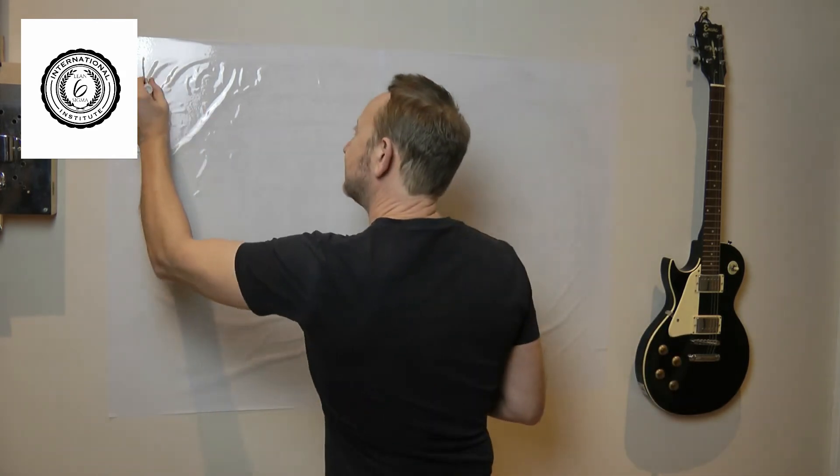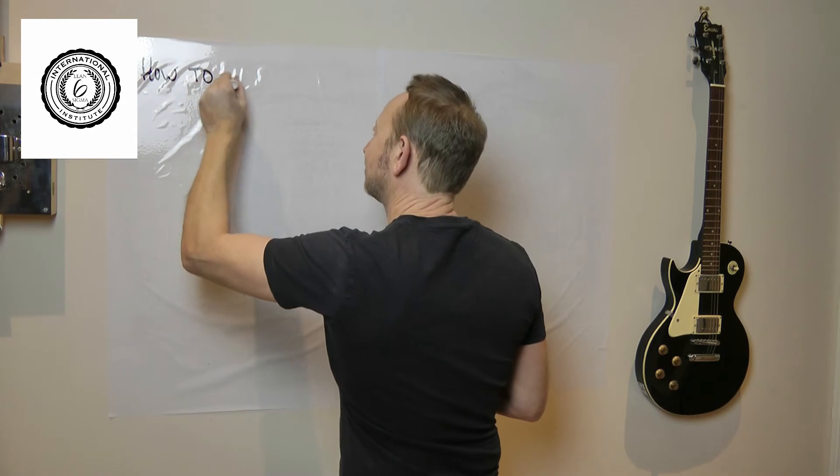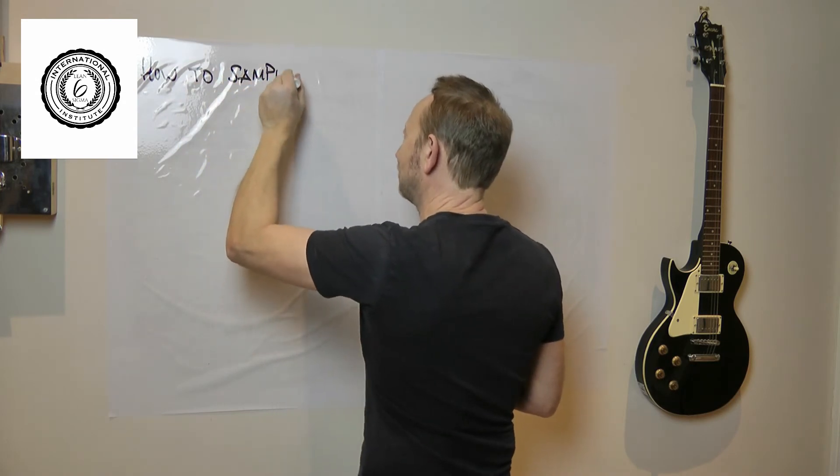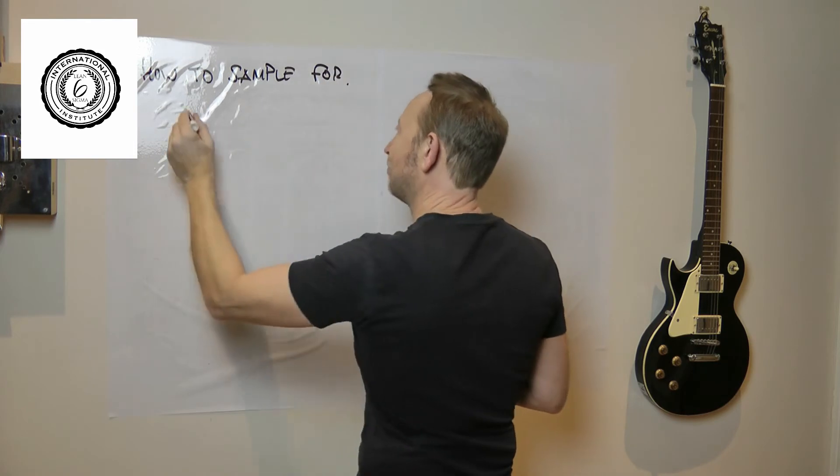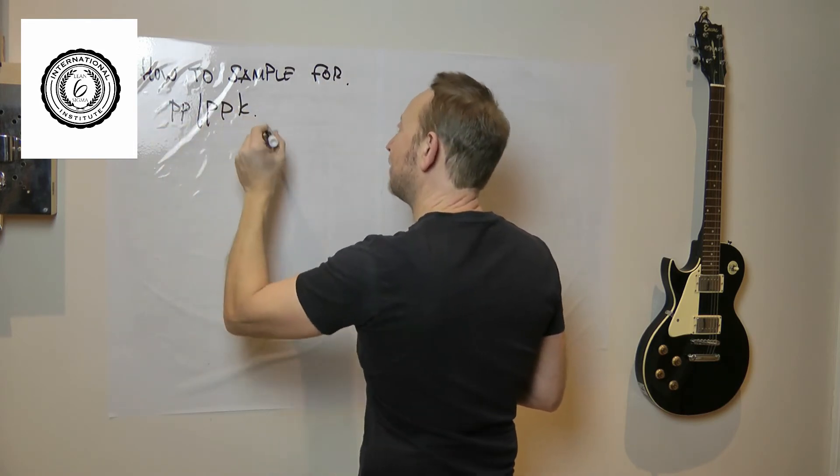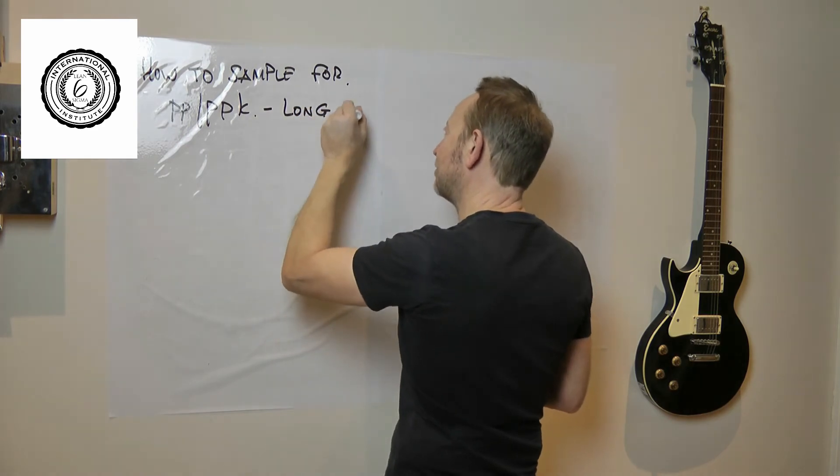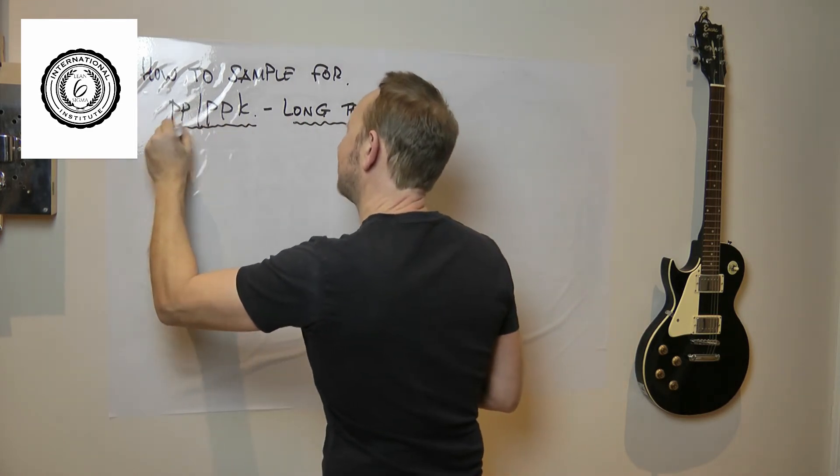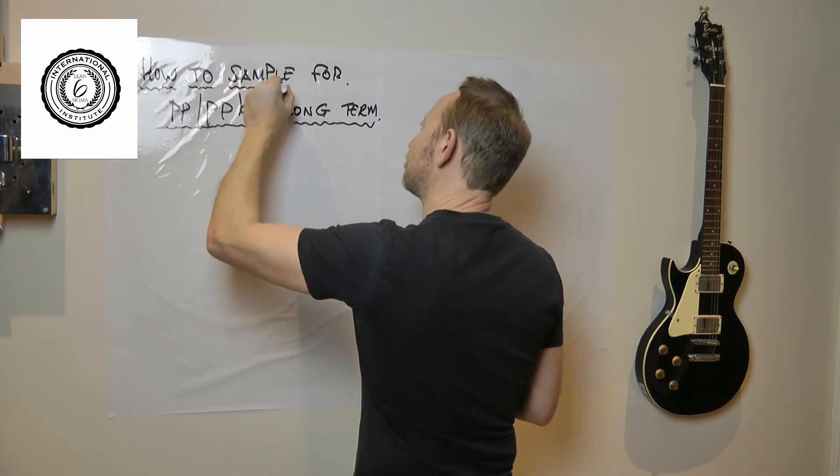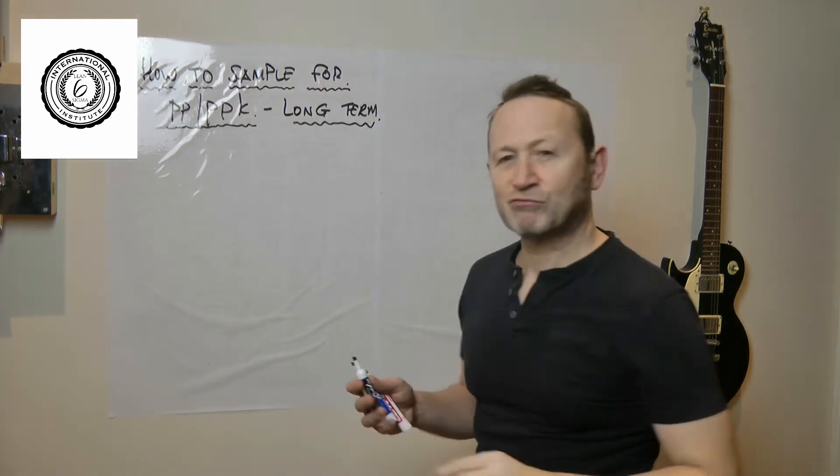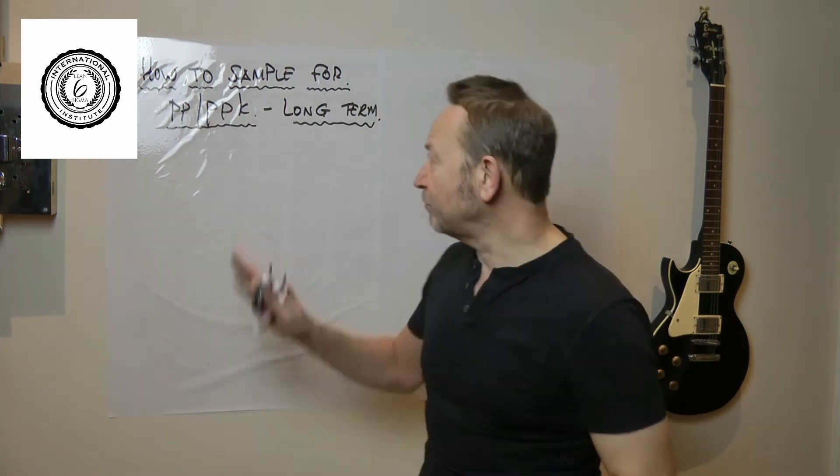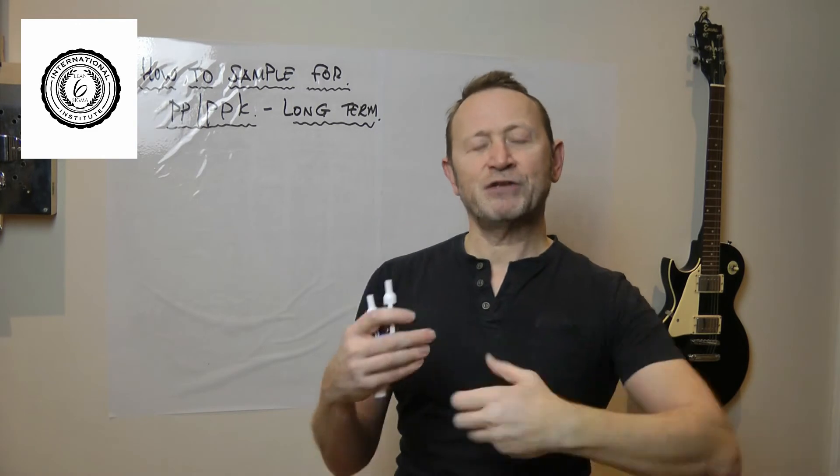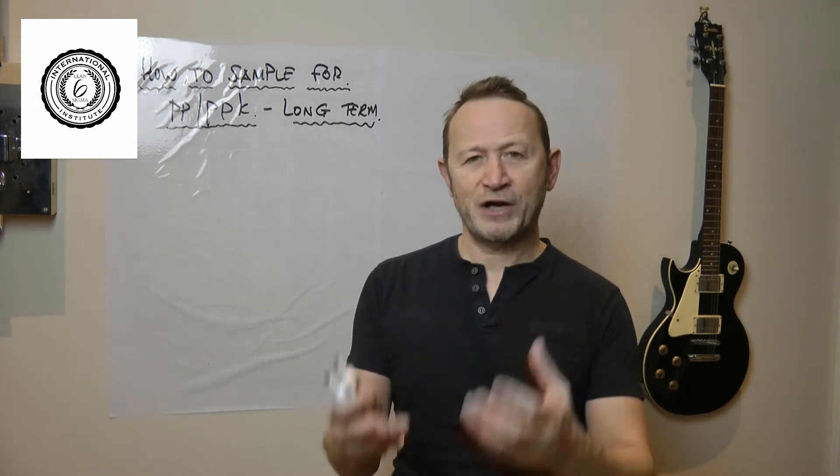So Ravi, let's answer your question now, which is I think you say how to sample, I guess the question really is when to sample for PP, PPK. Effectively what we're talking about here of course is long-term, the long-term capability. And to be honest, thinking this through before you start is a really good thing to do. So I'm going to take you through a few steps here, my thought process about how I create CP, CPK, PP, PPK results.